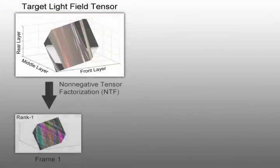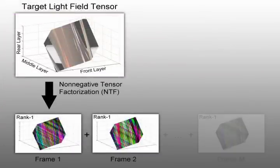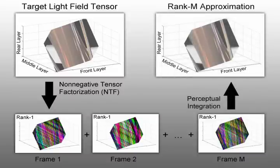Using non-negative tensor factorization, we decompose a target light field into the optimal set of rank-1 tensors that are displayed in quick succession and perceptually averaged by the observer. What the viewer perceives is a time-averaged rank-M approximation of the target light field tensor.